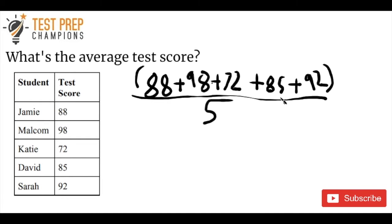And so I'm just going to use my calculator off screen here to do this. We've got 88 plus 98 plus 72 plus 85 plus 92. And my calculator is telling me that that's equal to 435. So let me rewrite this. We've got 435 divided by five.